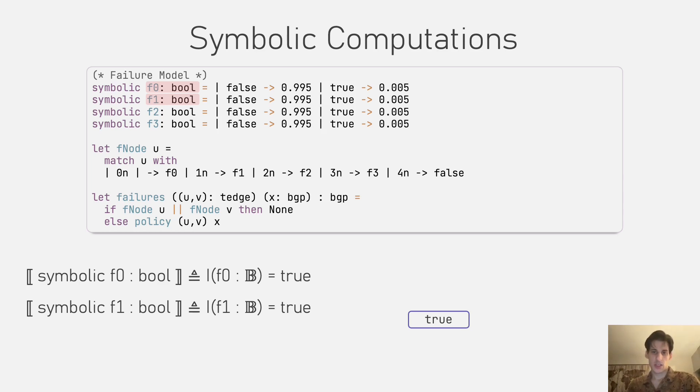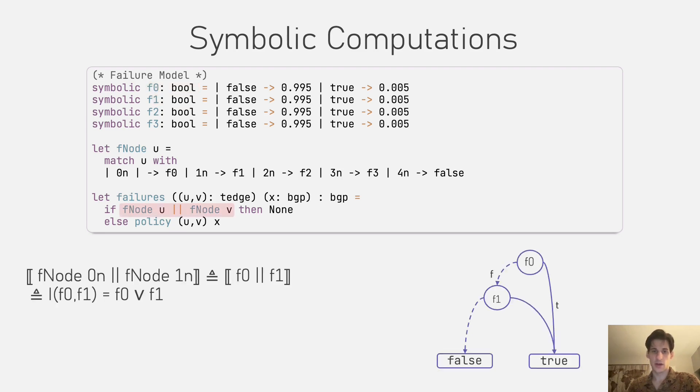If we want to compute the set of values that describes that either F0 or F1 are true, then we can just directly do so over the binary decision diagrams. For the logical OR, if F0 is true, then this leads to the true leaf because it belongs to the set.